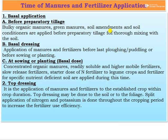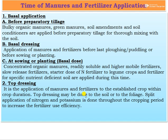Regarding the time of manure and fertilizer application: as basal application, this is done before primary tillage or preparatory tillage. Bulky organic manure, green manure, soil amendments, and soil conditioners are applied before primary tillage for mixing with the soil. The second time is basal dressing — application of major fertilizers before last plowing, puddling, or before sowing or planting, called basal dose. Concentrated organic manure, slow-release fertilizers, starter dose of nitrogen to legume crops, and fertilizers for specified nutrient-deficient soils are applied at this time. Top dressing refers to application of major fertilizers to an established crop within the crop duration, and may be done to the soil or to the foliage. Split application of nitrogen and potassium is done throughout the cropping period to increase fertilizer use efficiency.